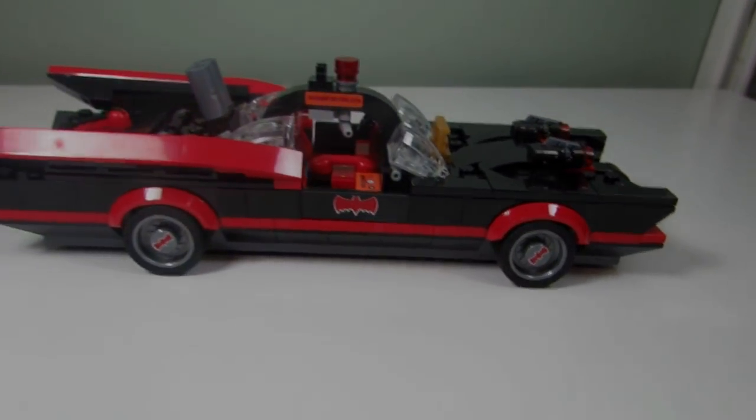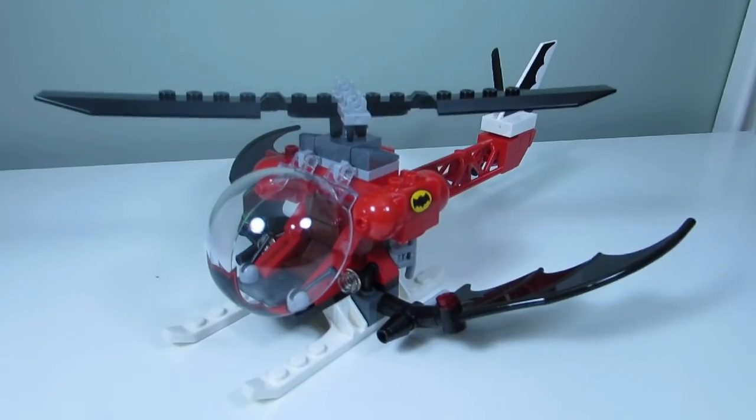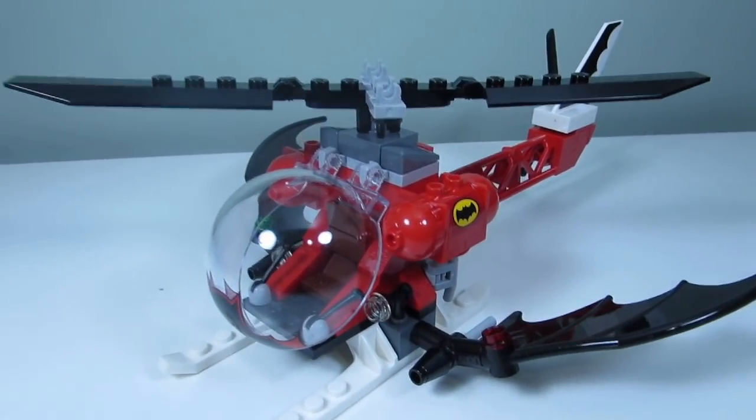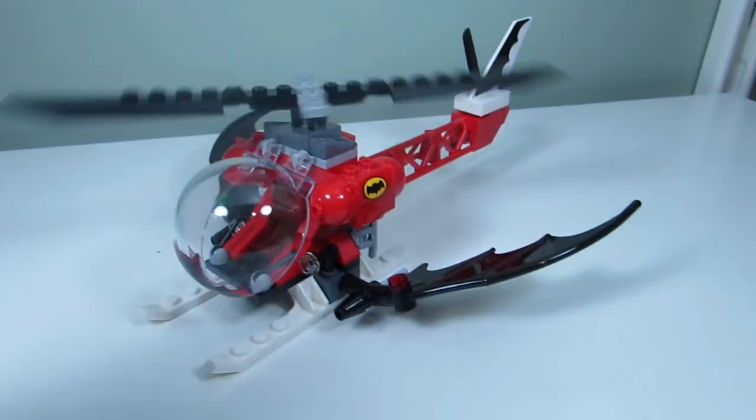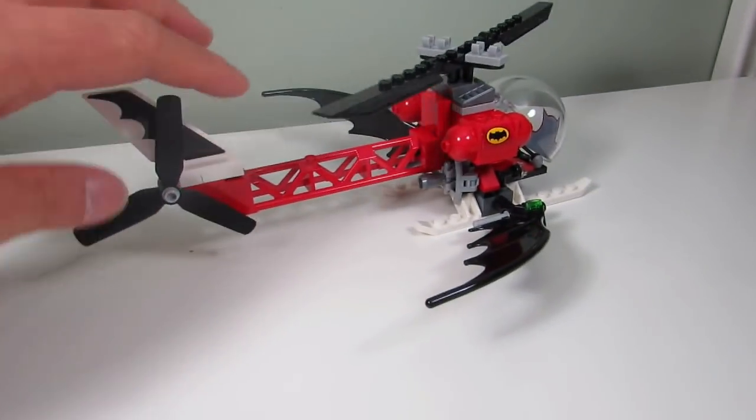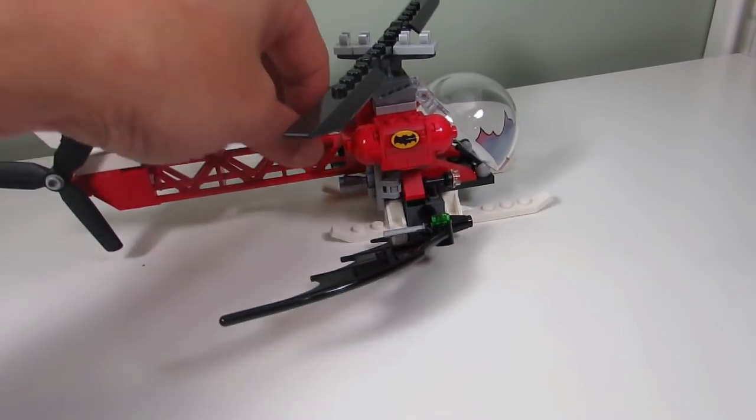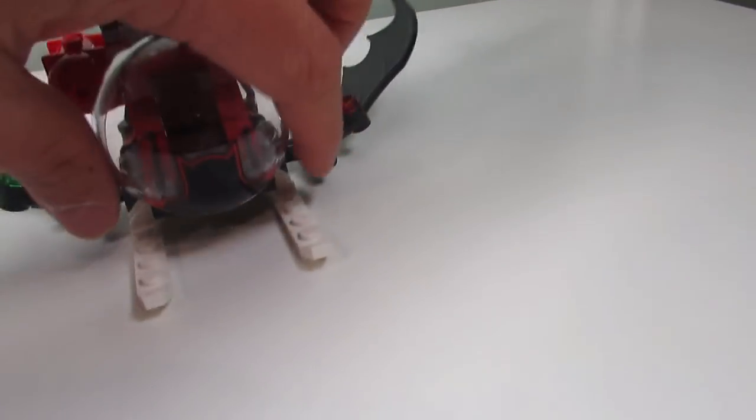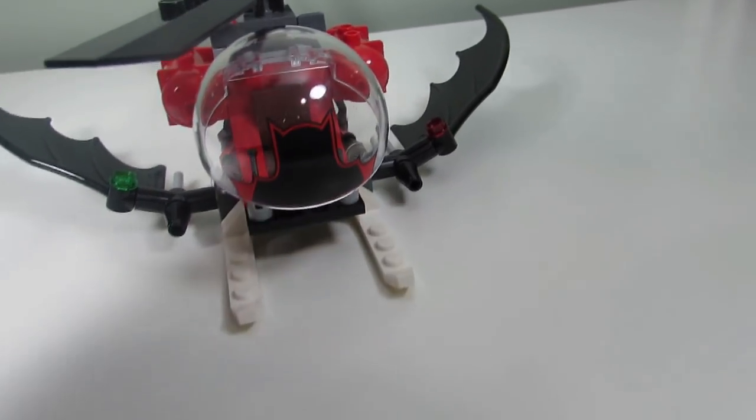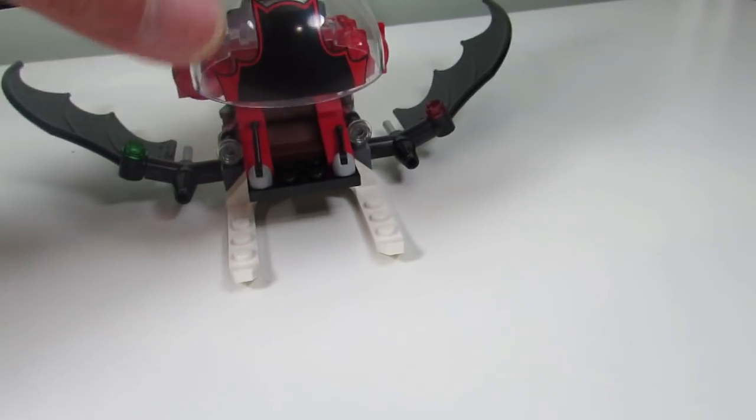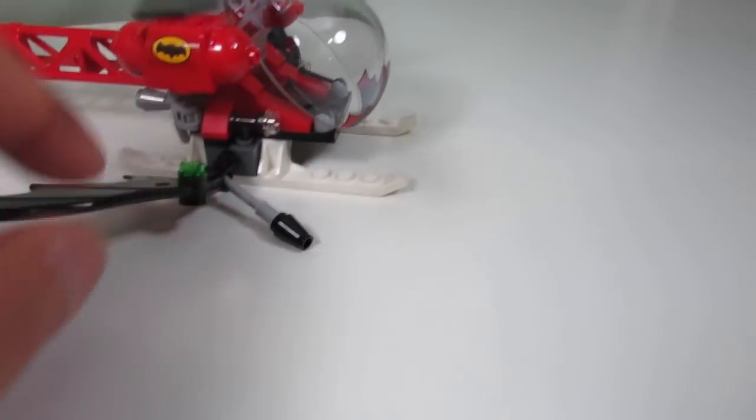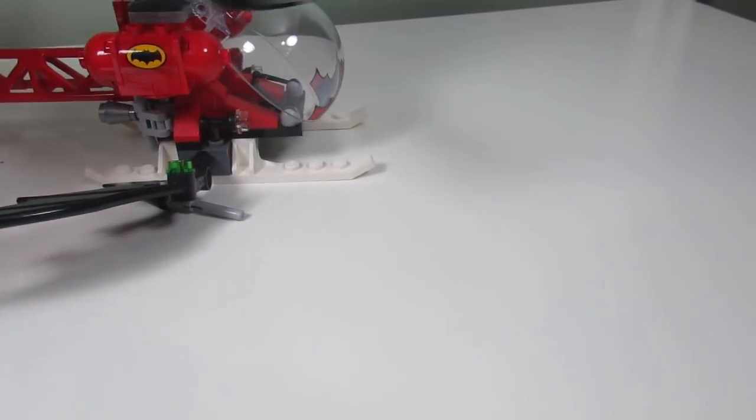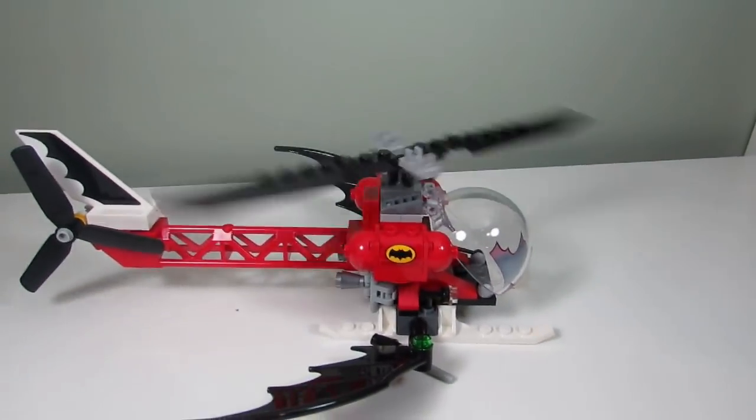Here is the Batcopter, the classic Batcopter, and again a very nice build. We got the propeller at the top, we have a propeller on the side. I like this piece in red, usually it's in black. And this is printed, the shadow of Batman printed on this bulb over here. We got where you can sit Batman and we got some flick fire missiles which aren't anyone's favorite but this is the classic Batcopter, a nice little build here.